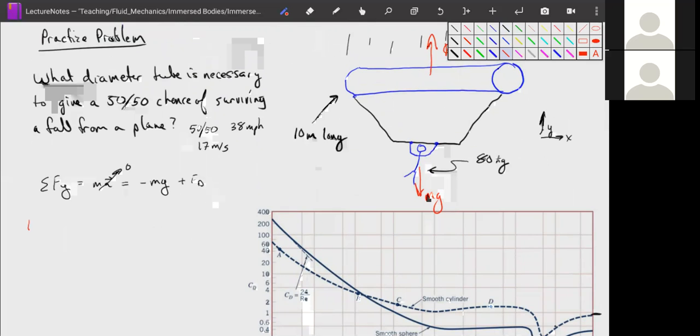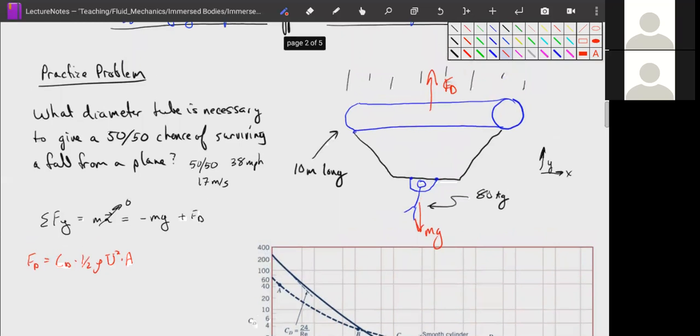Our drag force, if we remember, Fd is equal to our drag coefficient times one half rho u squared times the area. And remember, this area changes based on the object. Sometimes it's the cross-sectional area perpendicular to the flow, sometimes it's the cross-sectional area parallel to the flow. In this case, because we're dealing with form drag and pressure drag, we're going to use the cross-sectional area perpendicular to the flow.